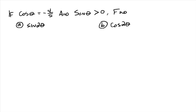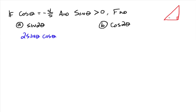Here's an example: if cosine of theta is negative 4/5 and the sine of theta is greater than zero, find sine of 2 theta and cosine of 2 theta. For part A, sine of 2 theta goes to 2 sine theta cosine theta. We already know cosine of theta is negative 4/5. We need to find sine of theta — one way is to draw a little triangle. If cosine theta is negative 4/5, cosine is adjacent over hypotenuse.